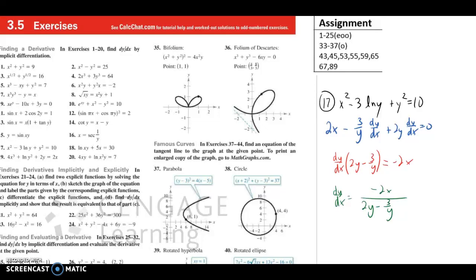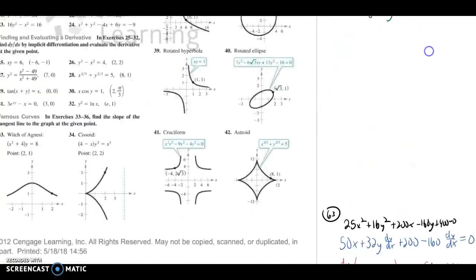It's from section 3.5 homework, problem number 17. The black is our original equation. If we differentiate all the terms implicitly, we get to the blue, and we'll keep all the terms with the dy/dx on the left, factor them out, move the 2x to the right by subtracting it, then divide by both sides, and we get our answer dy/dx equal to that.